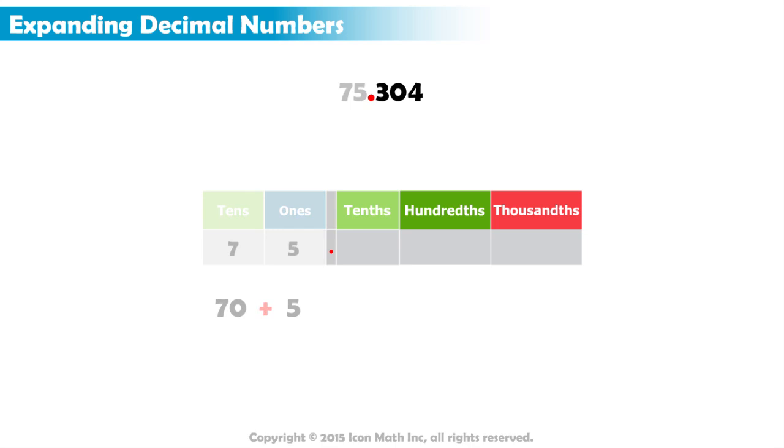Let us now move on to the decimal part. In a similar way, we look for the digits that are not equal to zero. Then, we write the value of each depending on its decimal place.